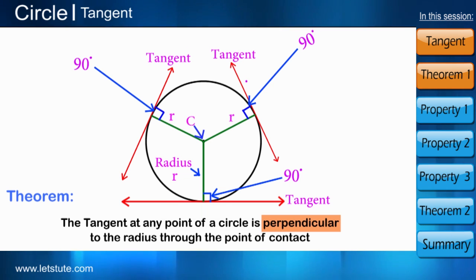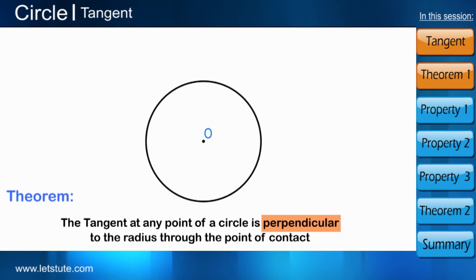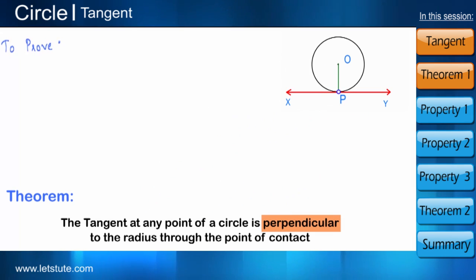Let us prove this. Let us consider a circle with radius OP. We have a tangent XY with a point of contact as point P. We have to prove that OP is perpendicular to XY.